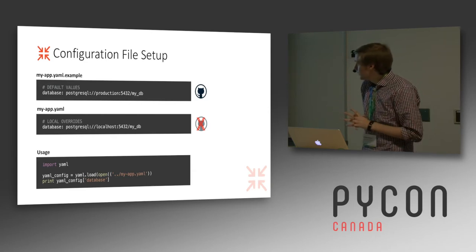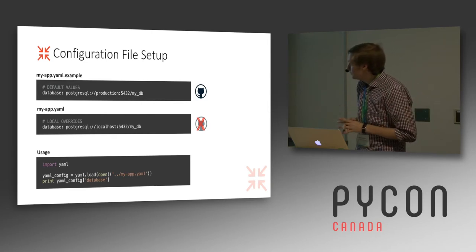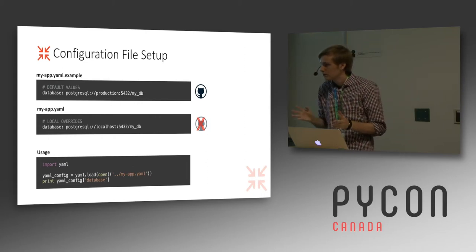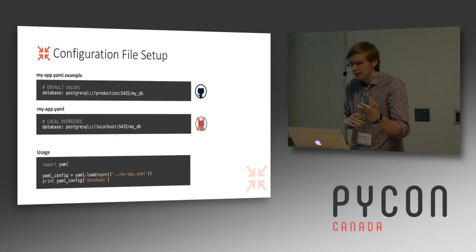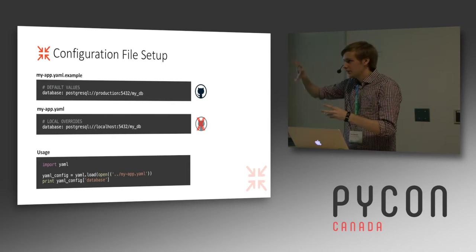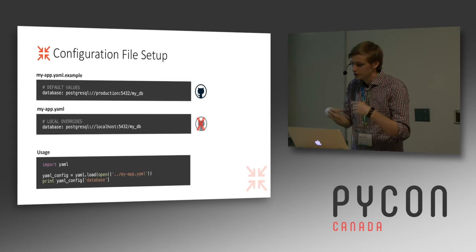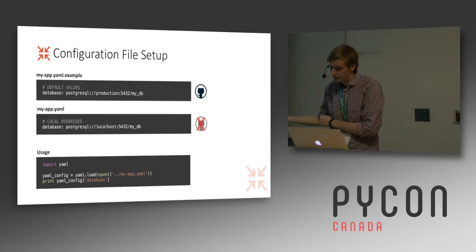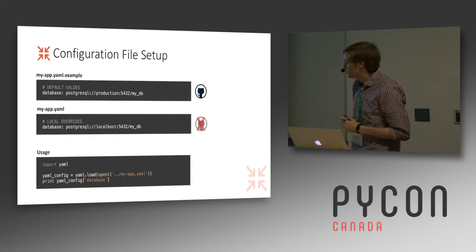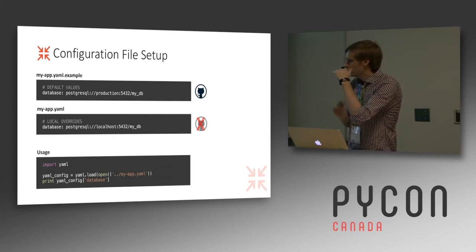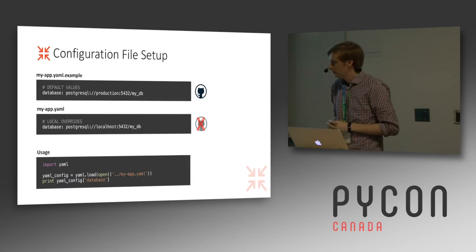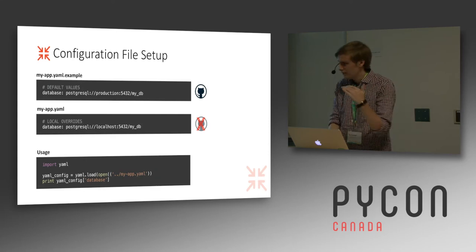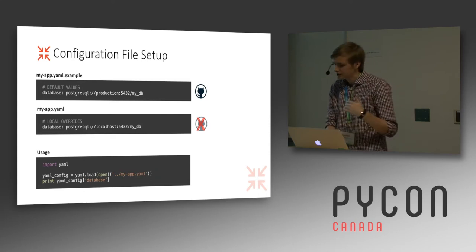A useful power feature is being able to nest configuration files. Imagine a scenario where you're pulling a sub-dependency that needs its own configuration. Instead of bundling all those variables into your own single config file, you can have configuration files with links to other configuration files. This can also be useful if you have one big file you want to split up to be more logically separated — having many different files instead of just one big one.